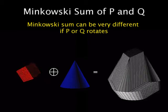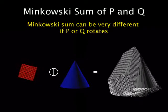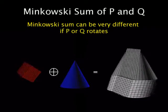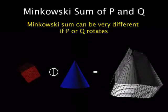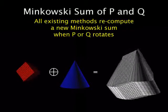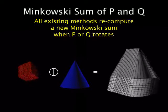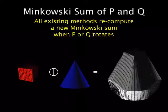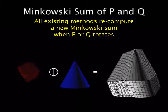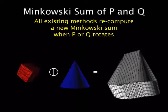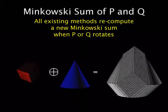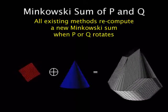Although many methods have been proposed to compute Minkowski addition, few methods concentrated on generating Minkowski addition for objects under rotation. When one of the objects rotates, all the existing methods handle rotation by recomputing Minkowski additions every time, regardless of the amount of rotation.